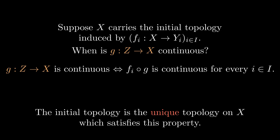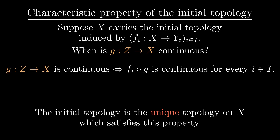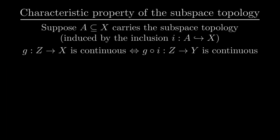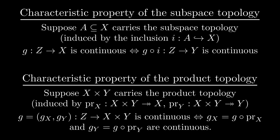That's why we also call this the characteristic property of the initial topology. We can apply this to the subspace topology and the product topology. For the subspace topology, we get that a map into a subspace is continuous if and only if the same map into the larger space is continuous. For the product topology, we have that a map into a product is continuous if and only if both components are continuous.